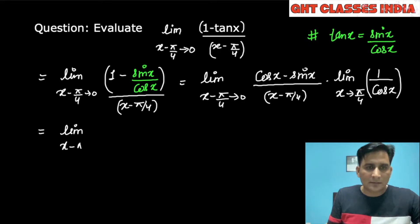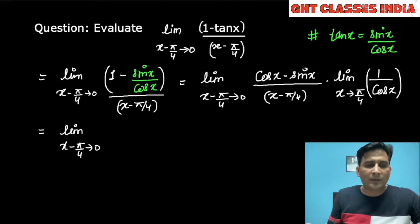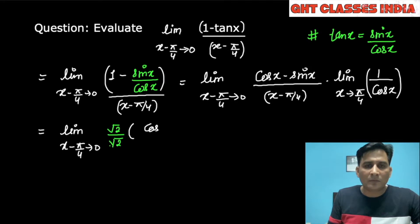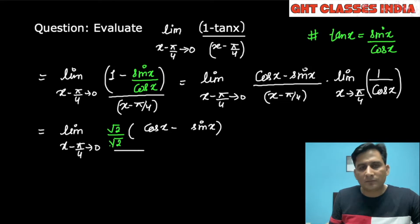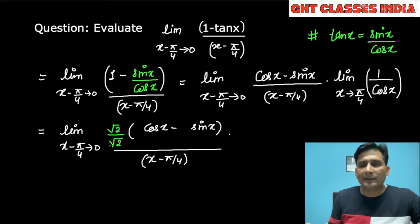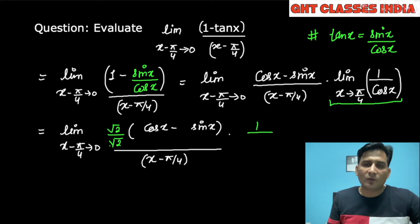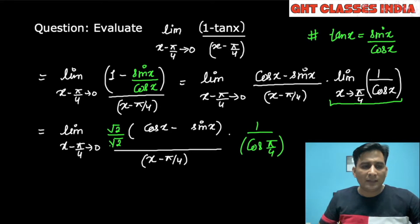In the next step, for limit x minus pi by 4 tends to 0, I am going to multiply and divide by root 2. The denominator is multiplied with root 2 and divided by root 2, so it becomes cos x minus sin x upon x minus pi by 4. Now applying the limit for the cos x denominator — putting x equals pi by 4 — it becomes 1 upon cos pi by 4.